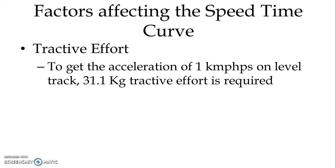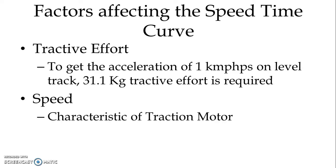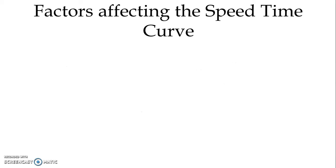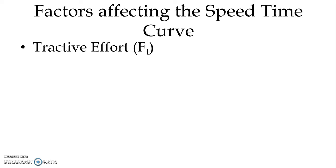For an up-gradient type of track, we require more tractive effort, and on the down gradient we require less tractive effort. It depends on the speed-torque characteristic of the traction motor and the resistance of the train. So let us discuss certain factors which affect the speed-time curve, and we start with tractive effort.